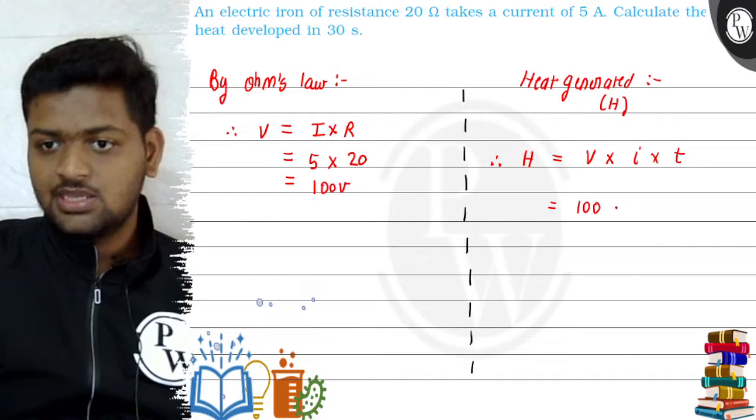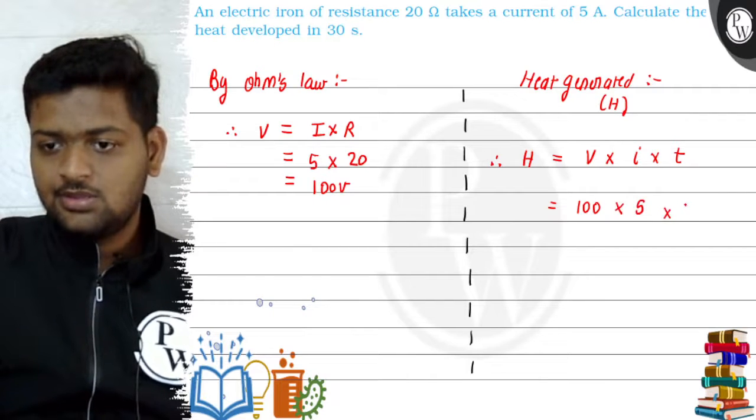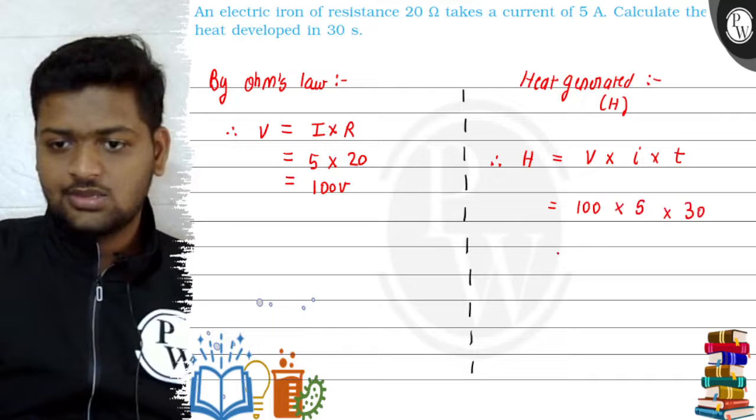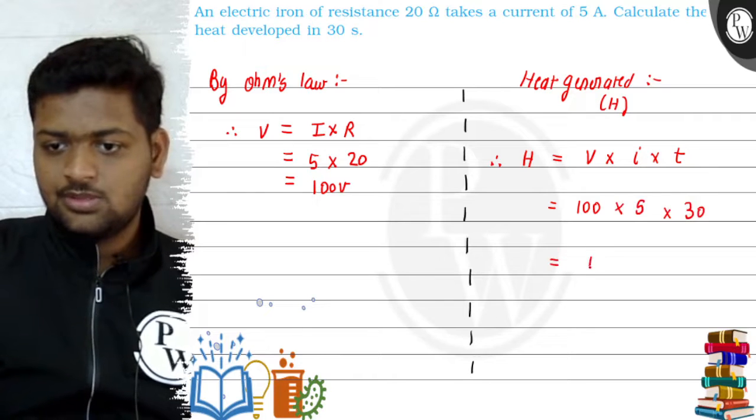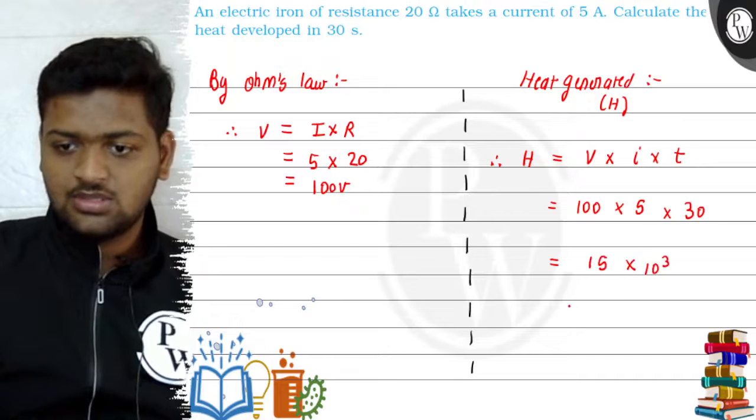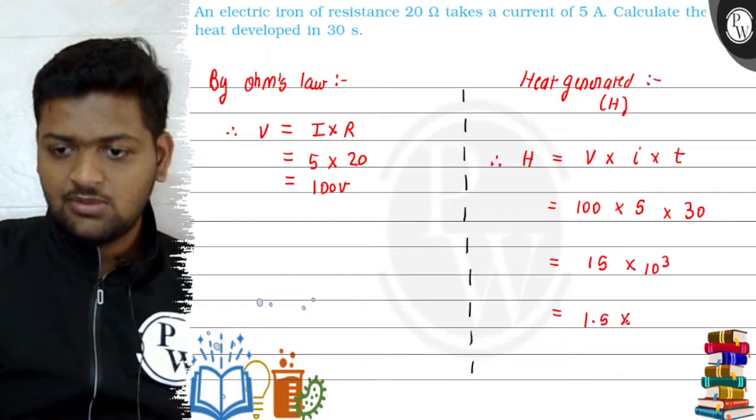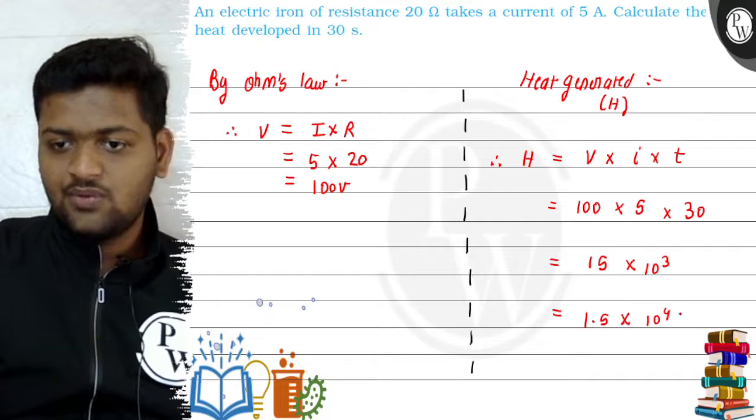Okay, so your voltage is 100, current is 5, and our time is 30 seconds, right? So it would be 5 into 3, 15 into 10 to the power 3. So it will be 1.5 into 10 to the power 4 joules of heat generated.